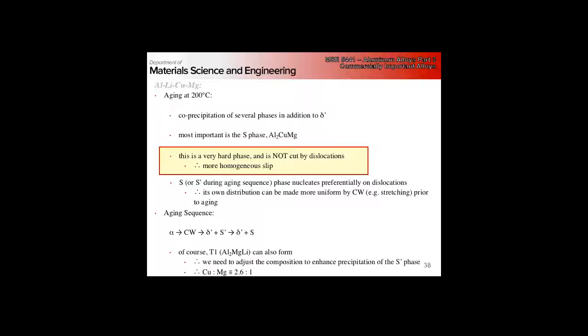We say these four work really well doing this, these four work really well doing this. If we put them together and have the eight, maybe those effects will be multiplied, or maybe they'll do something different that we didn't expect. Basically, we get this complicated co-precipitation of multiple phases. The important one is this S-phase aluminum two copper magnesium that is very hard and is not cut by dislocations.